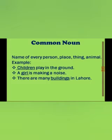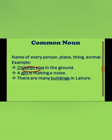The first kind is common noun, which in Urdu is called ism-e-nakra. The name of any common person, place, or thing is called a common noun. For example: 'Children play in the ground,' 'A girl is making a noise,' and 'There are many buildings in Lahore.' In these three sentences, children, girl, and buildings are common nouns.